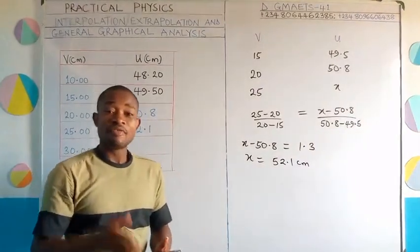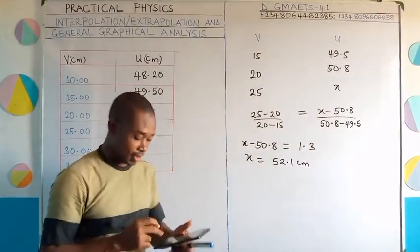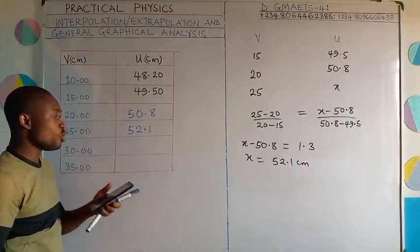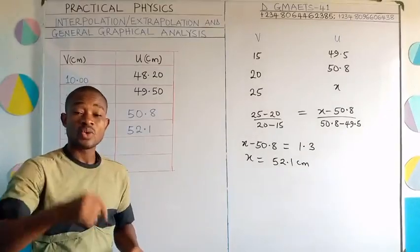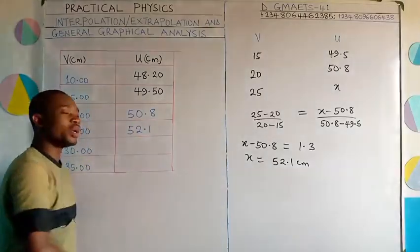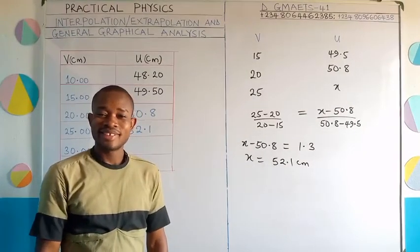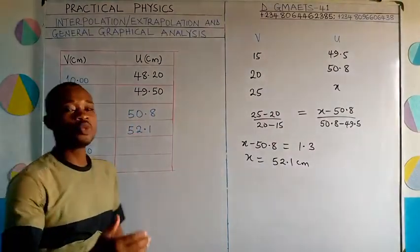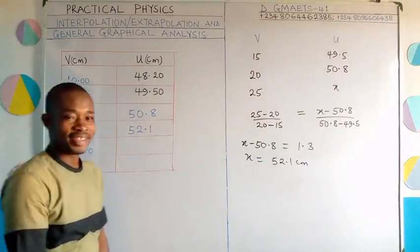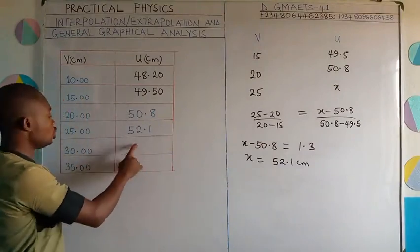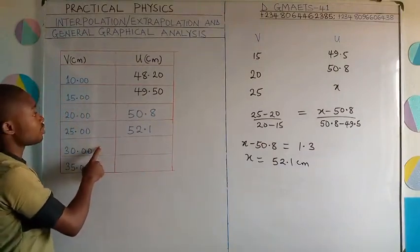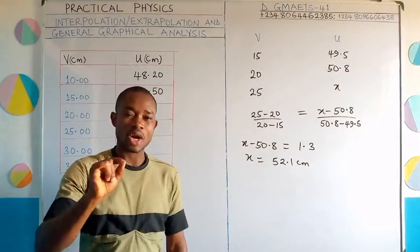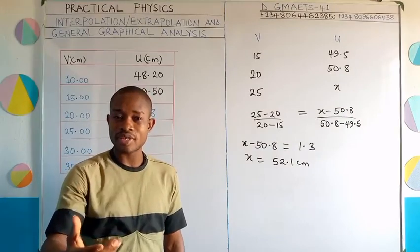Comparing 52.1 cm with the actual experimental value of 52.4 cm for v = 25 cm — very close. So the same process can be used to obtain the values of u when v is 30 cm and 35 cm by extrapolation. With this method you get your values quickly and you'll be set to plot your graph.